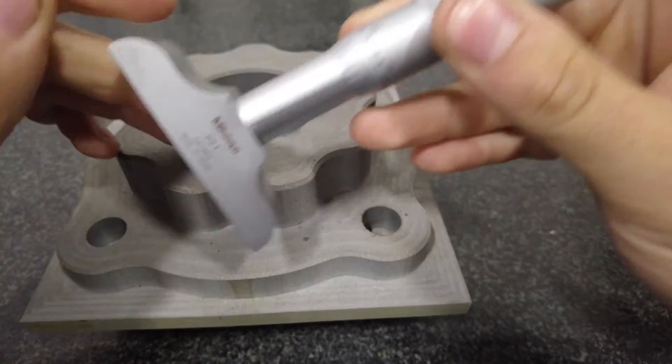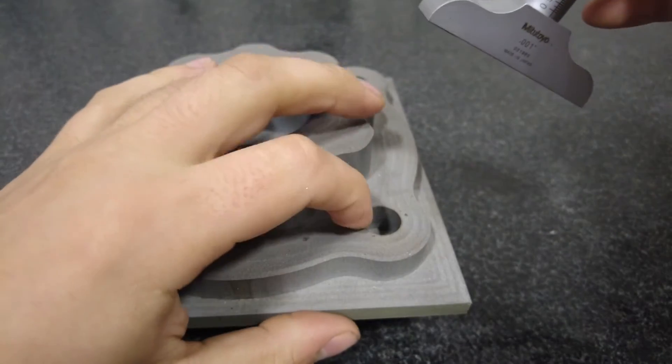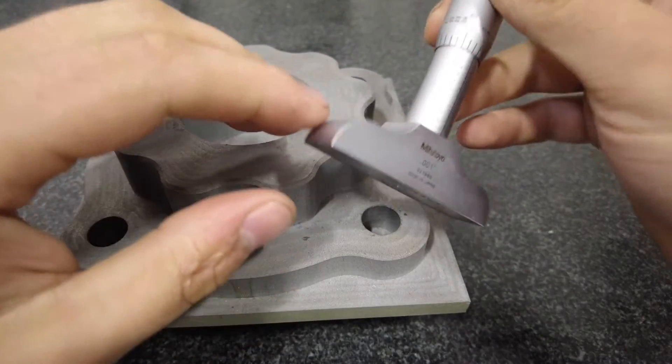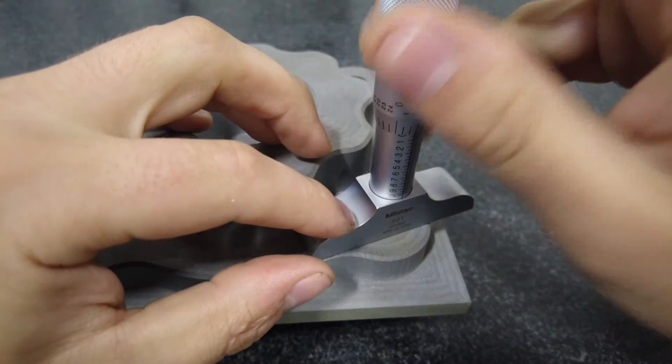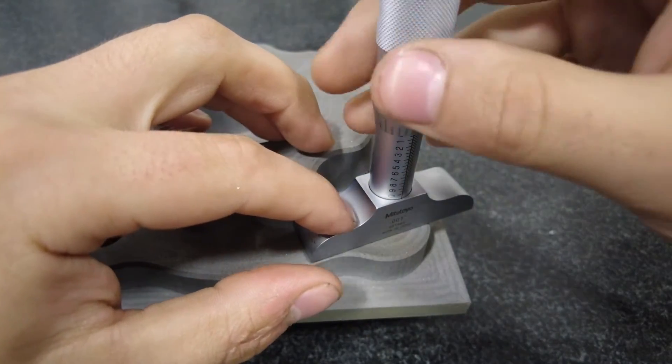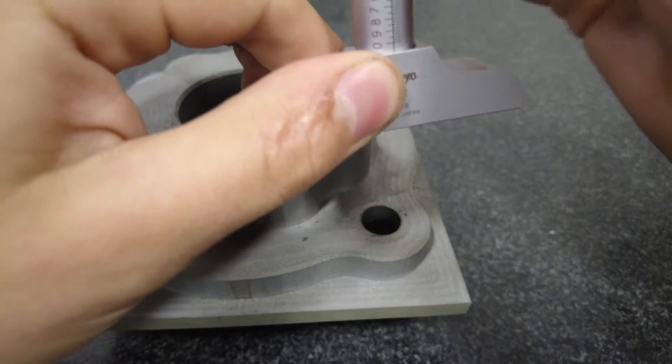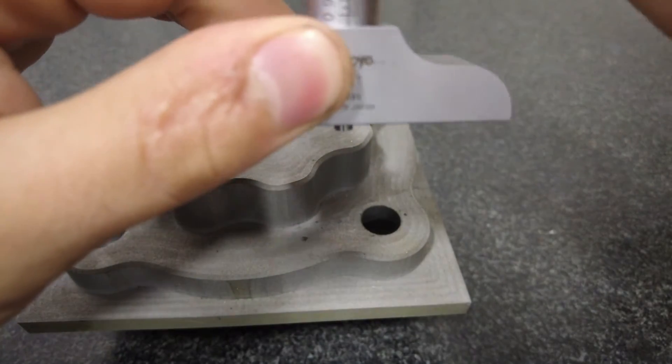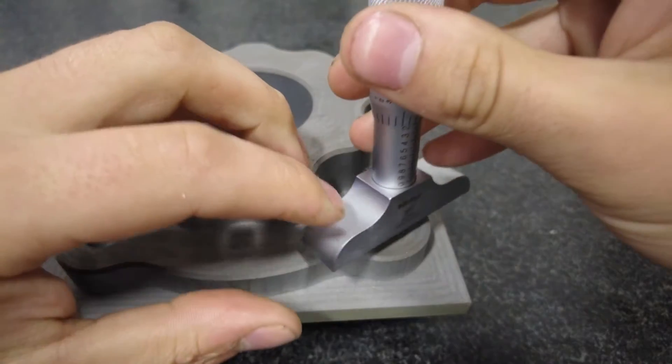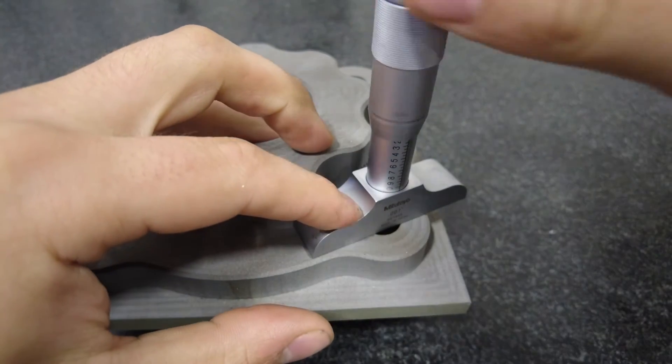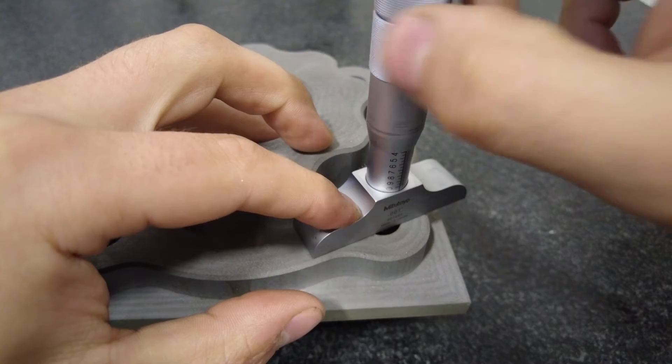So to start let's measure this pocket here, this hole from here down to the bottom of the hole. We're going to set our base on here making sure that when I twist this that the depth rod can go down the base. You can see as I twist it that depth rod is going to come out. I'm going to stick that into the hole. I'm going to twist it down until I hit the bottom.